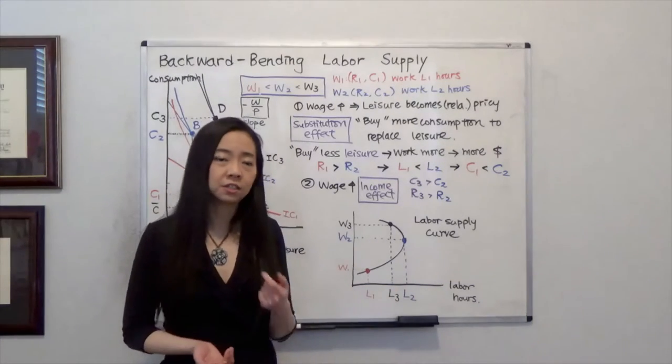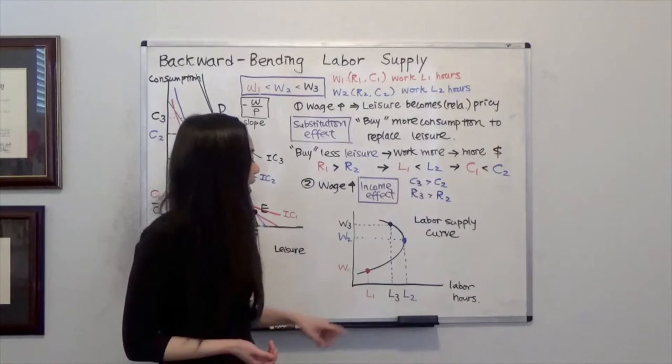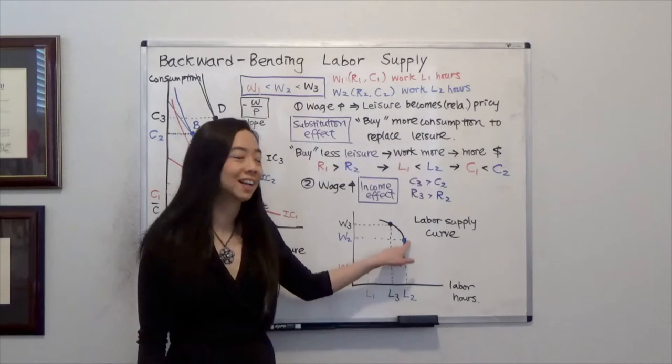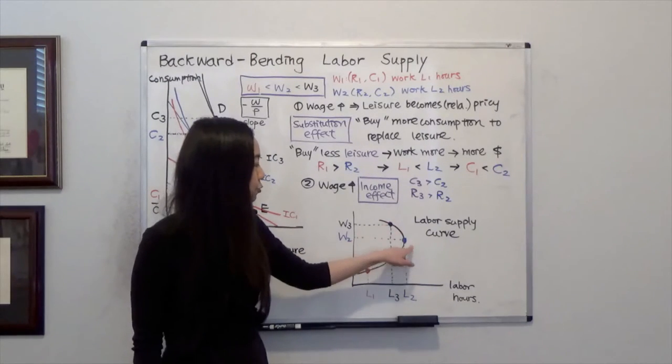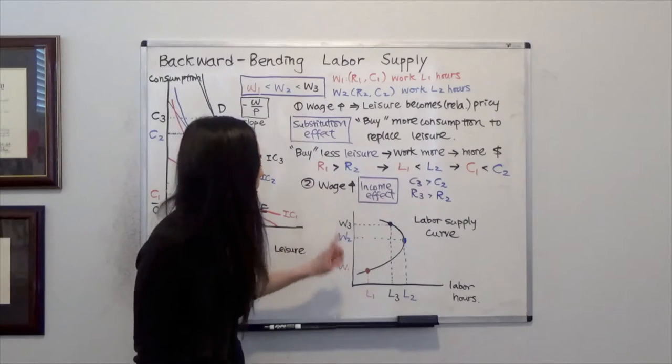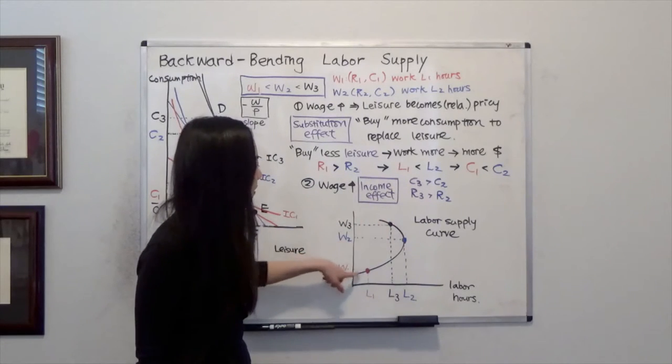Now, if your wage continues to increase to W3, then you are going to work less than before, so you're going to reduce your labor hours. So you can see that your labor supply curve is backward-bending, and I'm going to explain why.